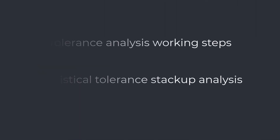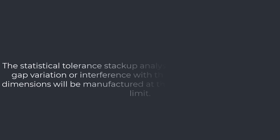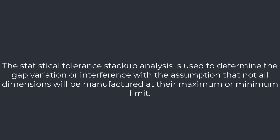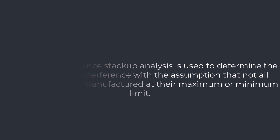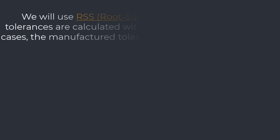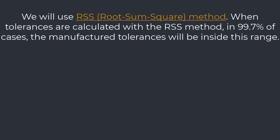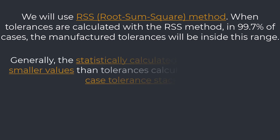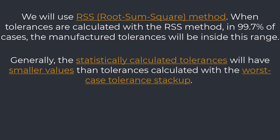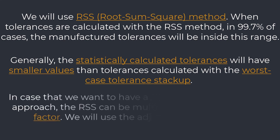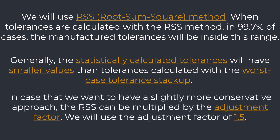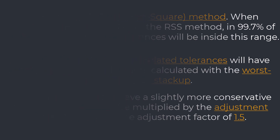Statistical Tolerance Stack-Up Analysis. The statistical tolerance stack-up analysis determines the gap variation or interference assuming that not all dimensions will be manufactured at their maximum or minimum limit — the dimensions will likely approximate a normal distribution, with most values closer to their nominal value than either extreme. We will use the RSS (root sum square) method. When tolerances are calculated with the RSS method, in 99.7% of cases the manufactured tolerances will be within this range. Generally, statistical tolerances will have smaller values than worst-case tolerances. For a slightly more conservative approach, the RSS can be multiplied by an adjustment factor — we will use 1.5.